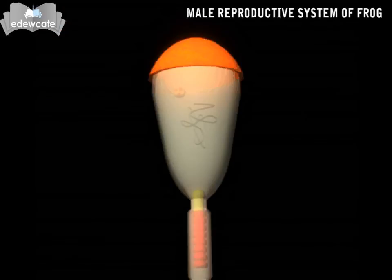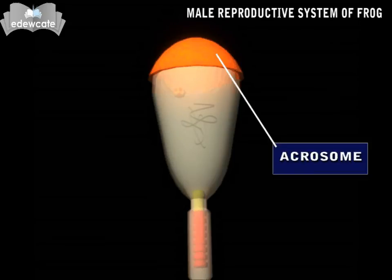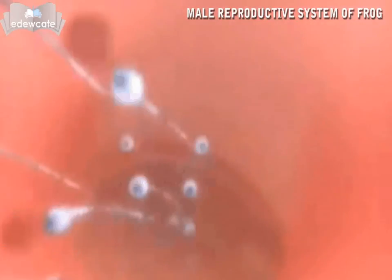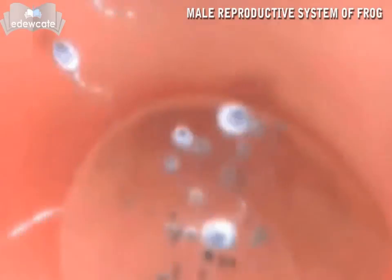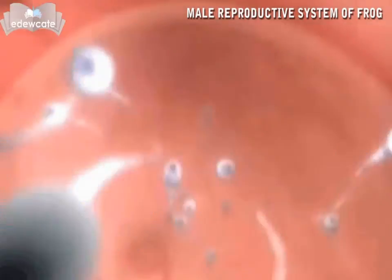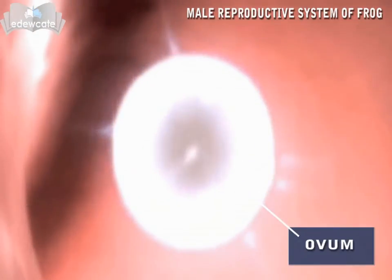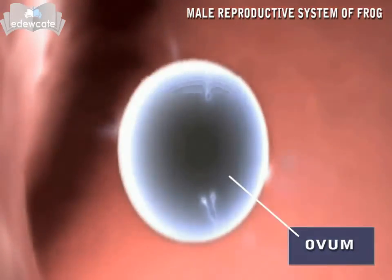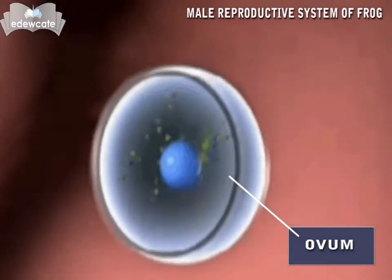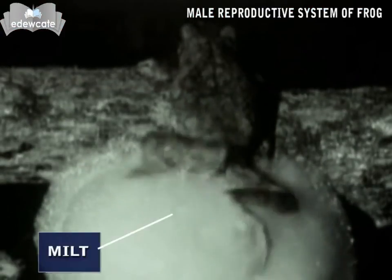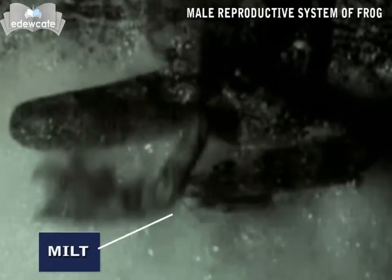On the head, there is a small structure called the acrosome. The acrosome helps the spermatozoon to penetrate into the ovum. Thousands of spermatozoa are discharged in a group. This is called milt.